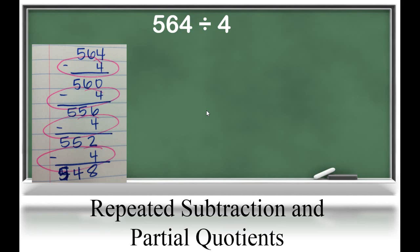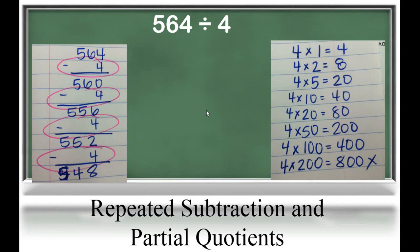So, they might start thinking, I wonder if there are larger numbers that I could subtract by. This strategy of subtracting by larger groups of 4 is called partial quotient. Before students start the partial quotient strategy, they need to list out some basic facts to help them. So, they know which multiples they can subtract by.